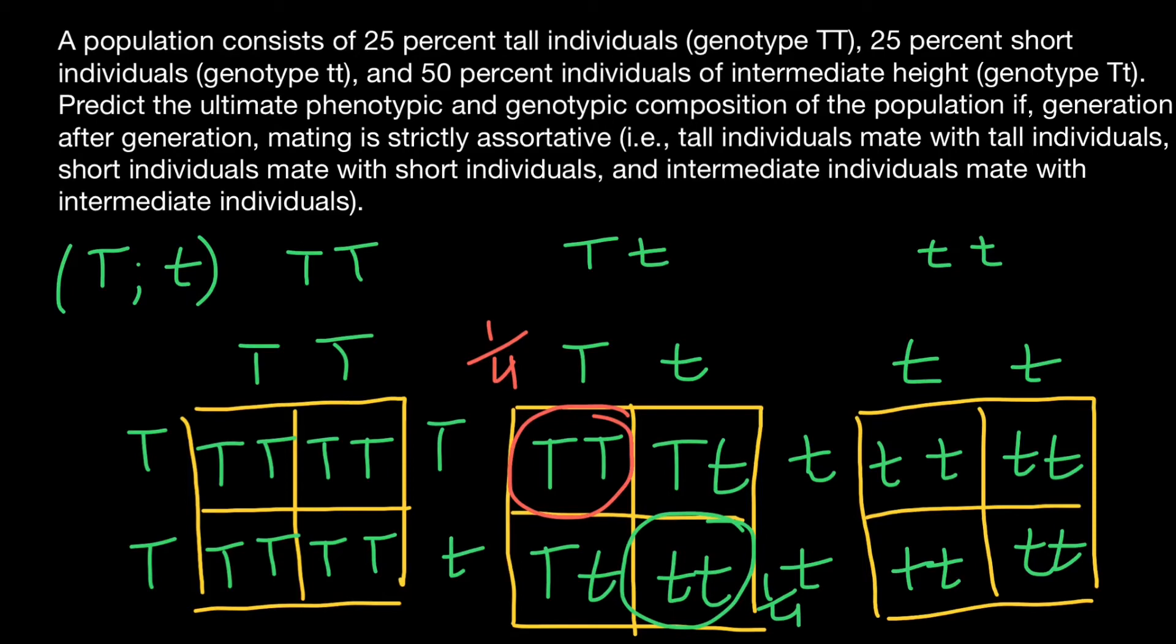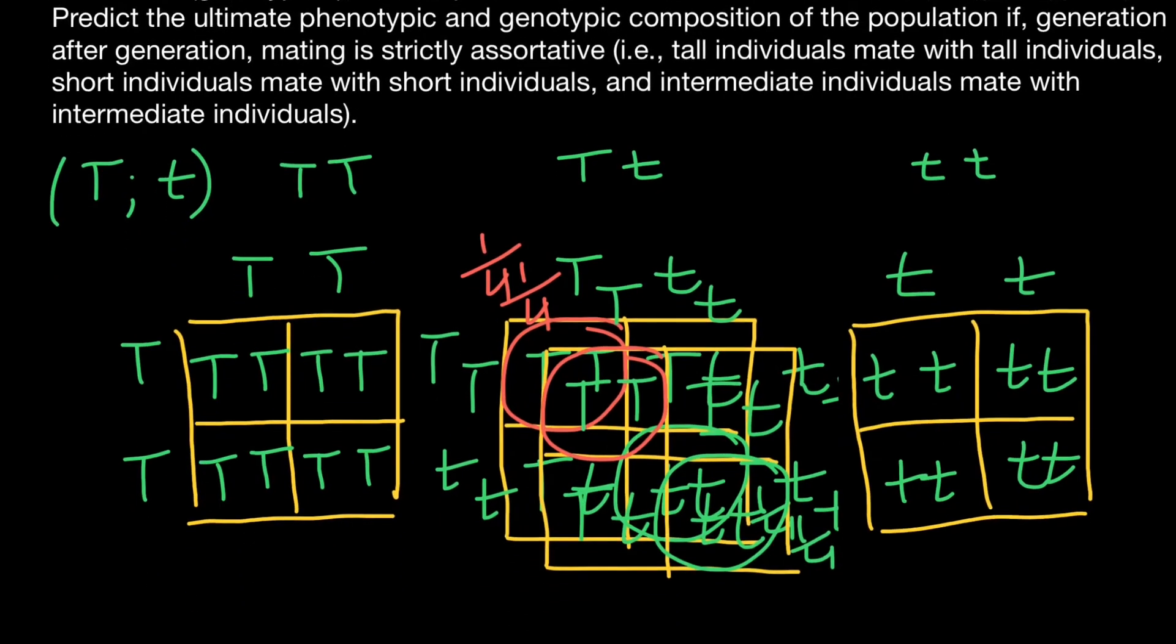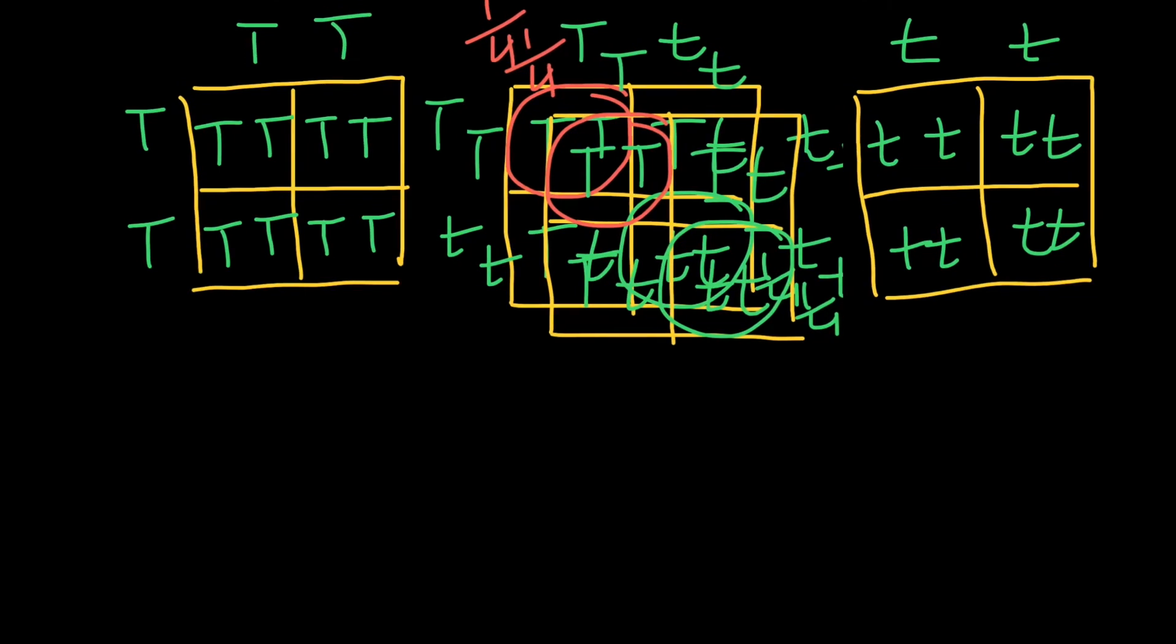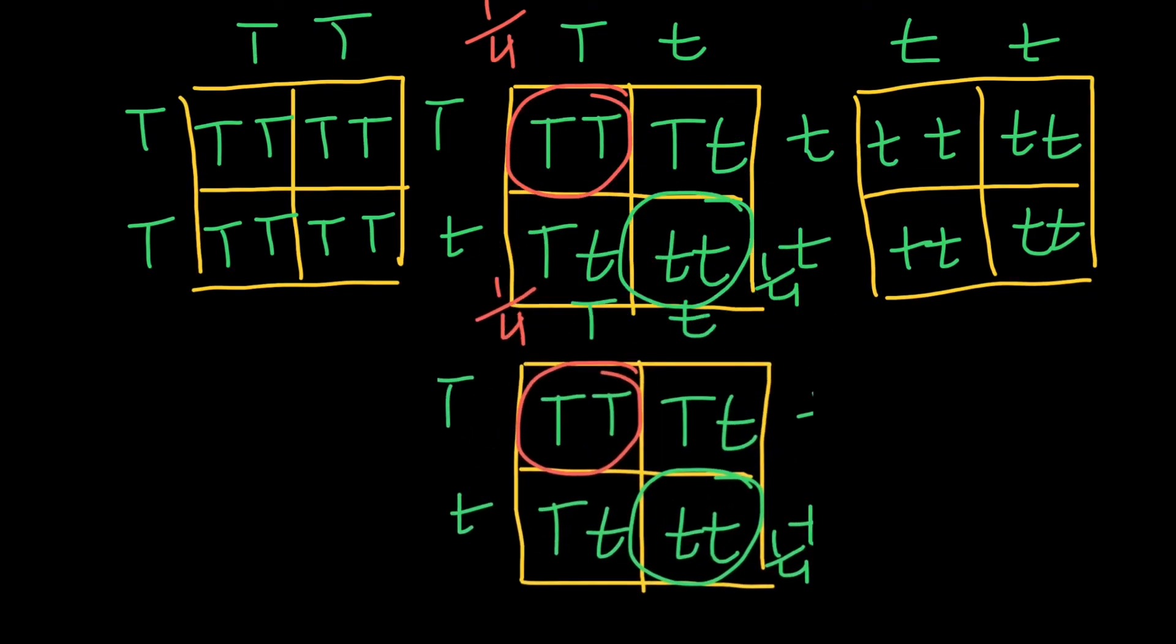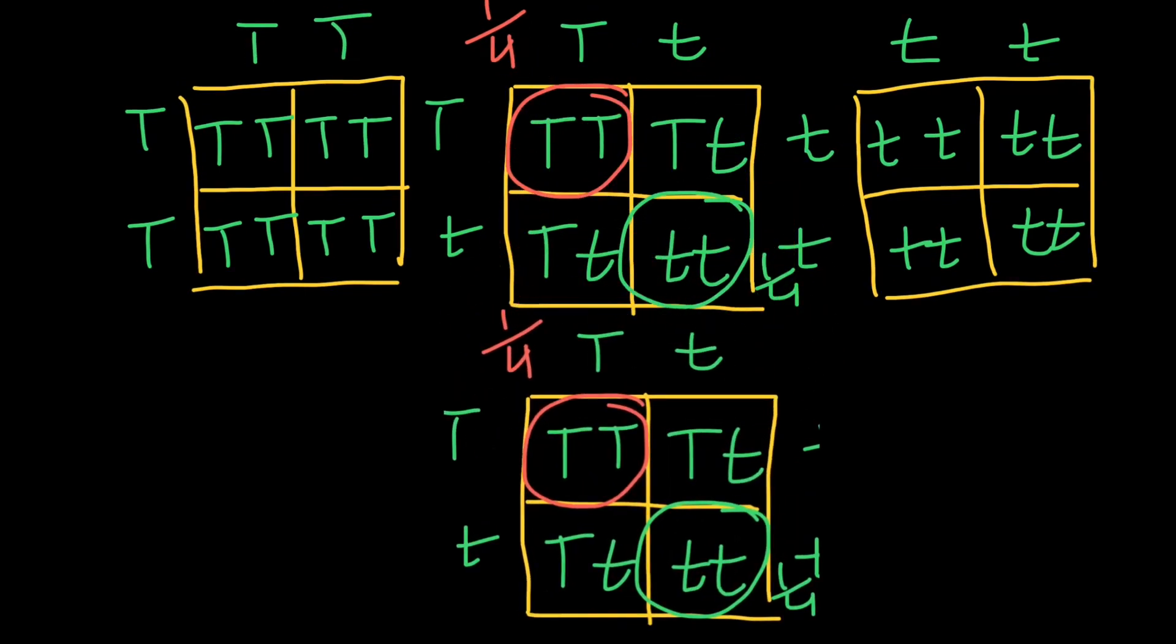So in the next generation, we are going to see the same picture. Take a look. For example, when heterozygous genotype would mate with heterozygous genotype, again, one quarter would result in homozygous dominant, one quarter would result in homozygous recessive genotype.